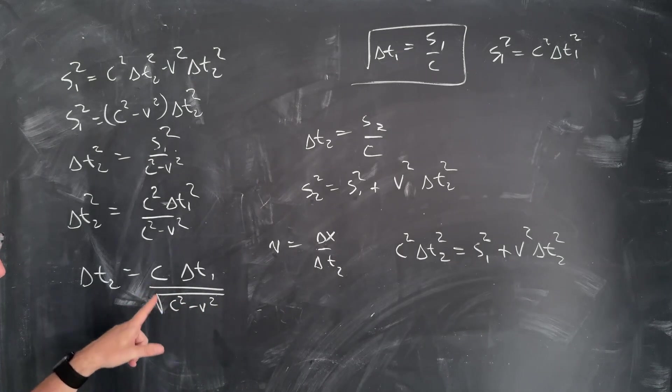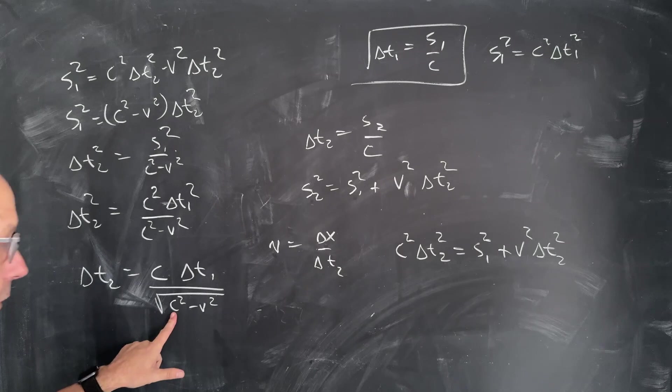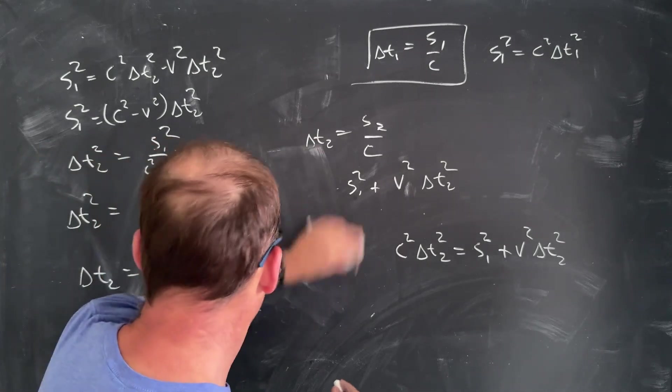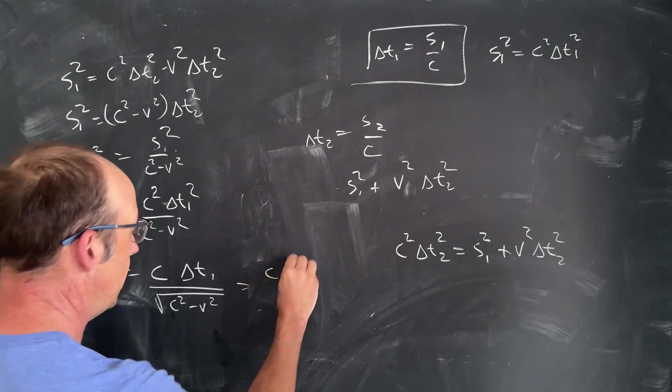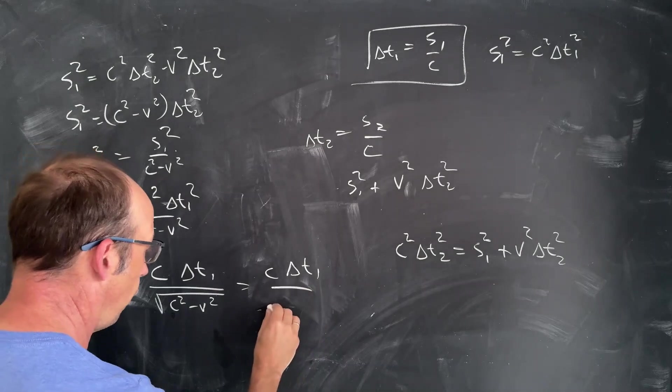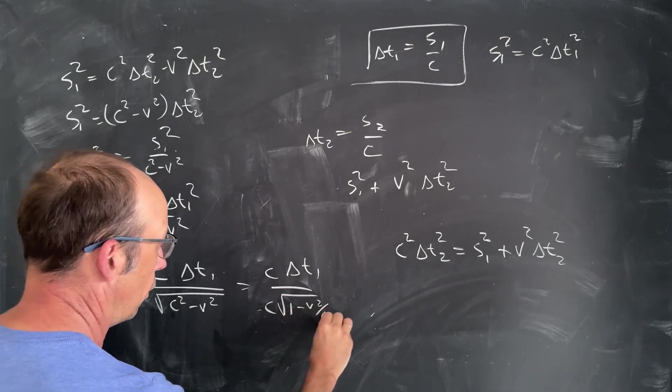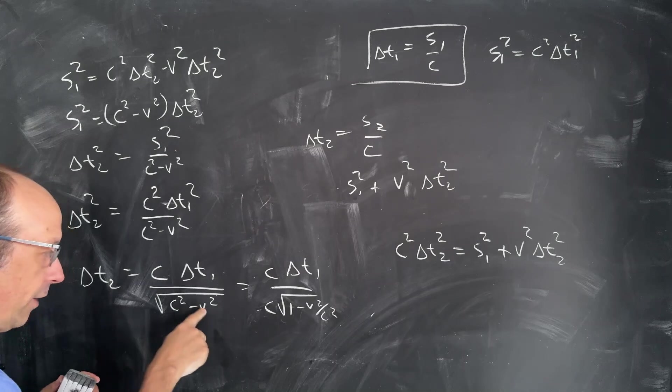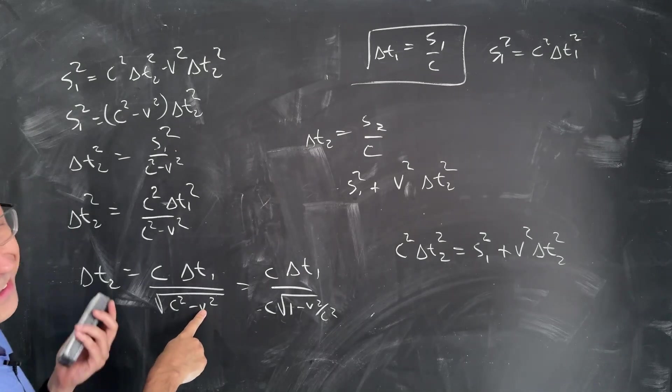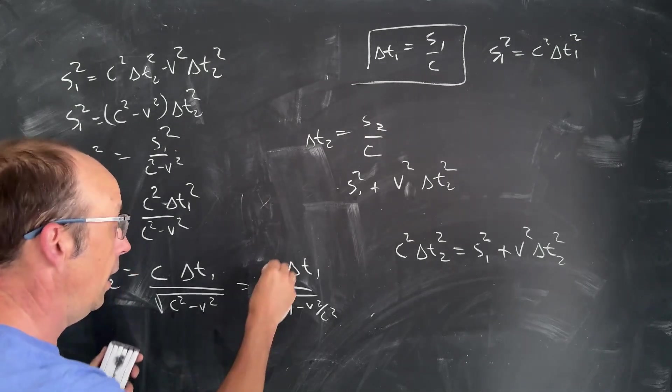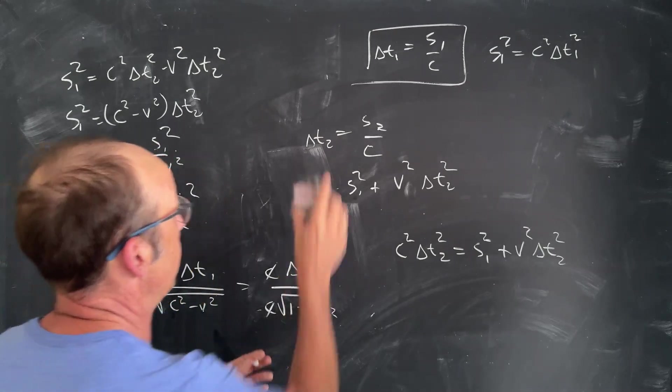Now I have a C on the bottom and the top. I'm going to factor out a C. I can write this as C delta T1 over C times the square root of 1 minus V squared over C squared. Because if I factor that out, I have to get a C out of there. But I don't have one there, so I just divide it out anyway. And those cancel. So there we have it. We have time dilation.